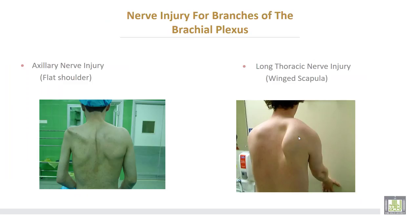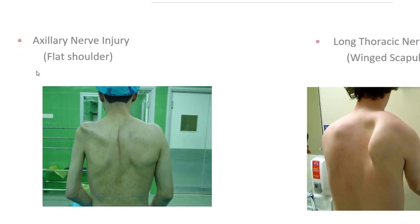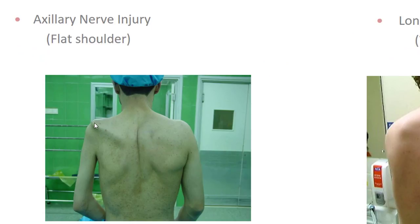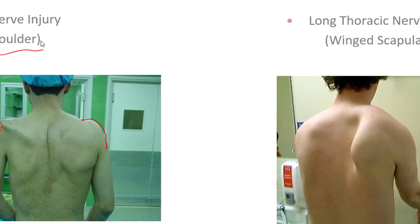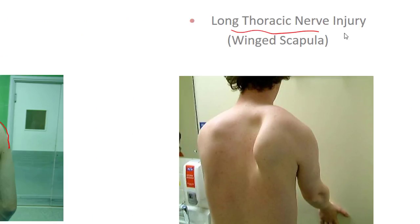Axillary nerve injury, also called circumflex nerve injury, results in paralysis of the deltoid muscle and the roundness of the shoulder becomes flat — this is called the flat shoulder. When there is injury of the long thoracic nerve, also called the nerve to serratus anterior muscle, there is winging of the scapula, because the serratus anterior keeps the scapula applied to the thoracic wall.